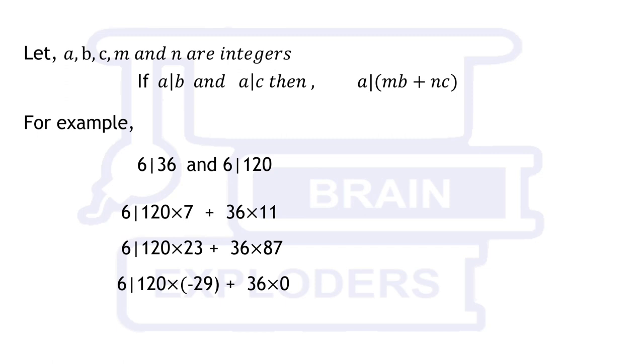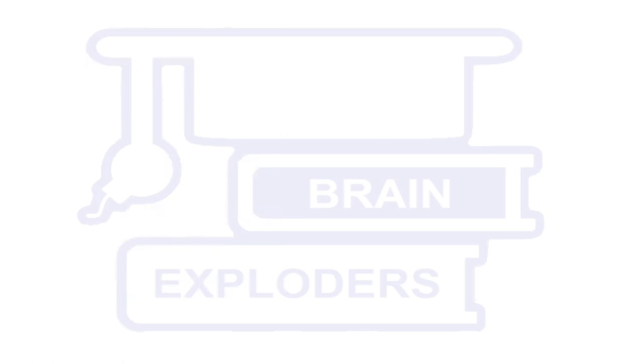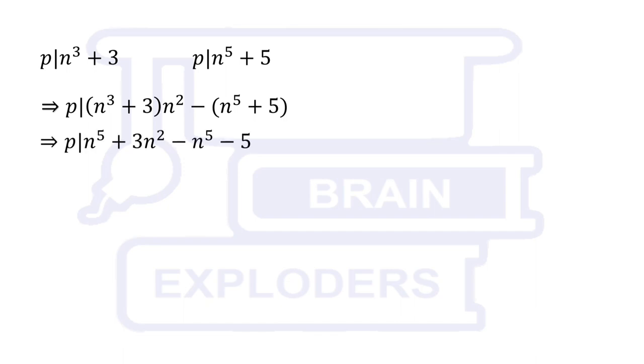It is given that p divides n cubed plus 3 and n raised to the power 5 plus 5. It implies that p divides this first number multiplied by n square minus second number. n square is multiplied here so that n raised to the power 5 gets cancelled out.